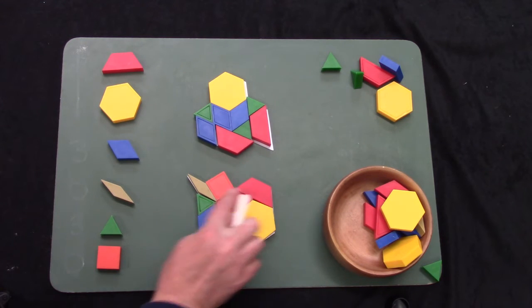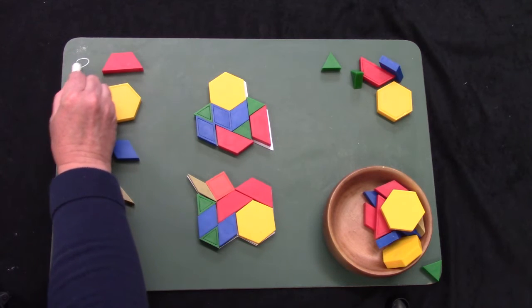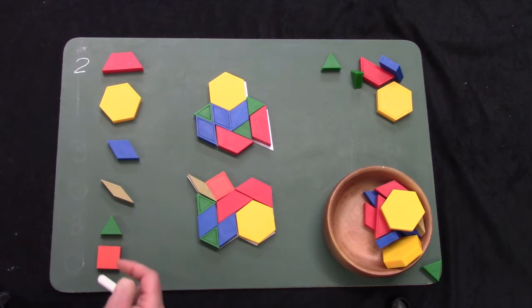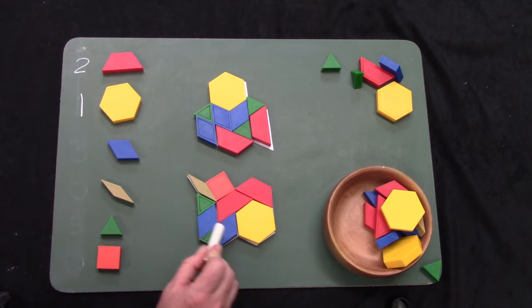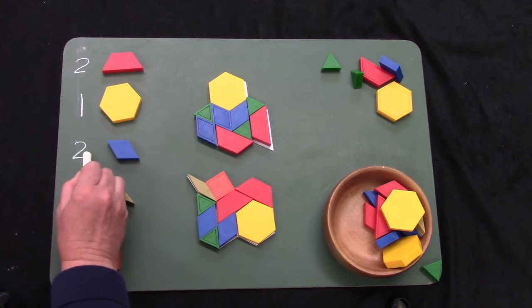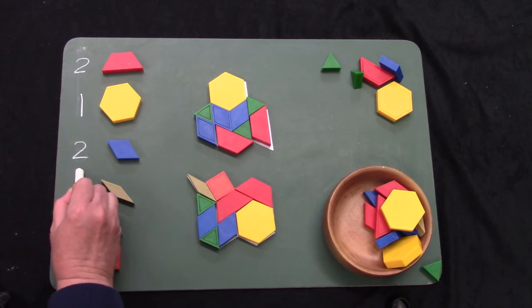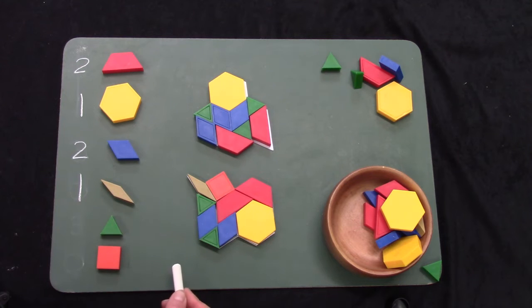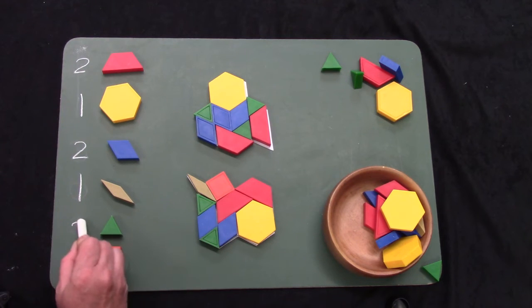On this shape, I have two trapezoids, one hexagon, two blue parallelograms, one tan parallelogram, two triangles, and one square.